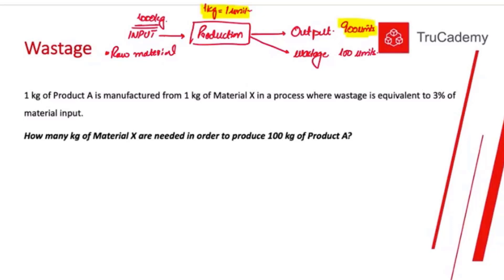So if we want to get 1,000 units of output, we need to estimate the wastage beforehand and buy a little bit extra raw material. When we input it, some will be wasted and some will become output. To get our desired output, we always need to estimate for wastage. There are usually two types: normal loss (normal wastage) and abnormal loss (abnormal wastage).